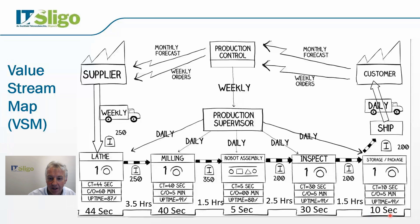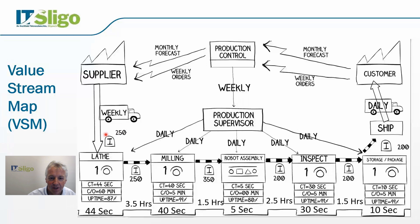We can calculate several lean metrics from this data. For example, we can look at the amount of inventory or work in process: 250 plus 350 plus 200 plus 200 gives us a thousand pieces of WIP, all costing money. Remember, inventory is one of the big wastes in lean. We could further break this down into finished goods (200) and raw material (250), giving us three metrics: total inventory broken down into WIP, raw materials, and finished goods.